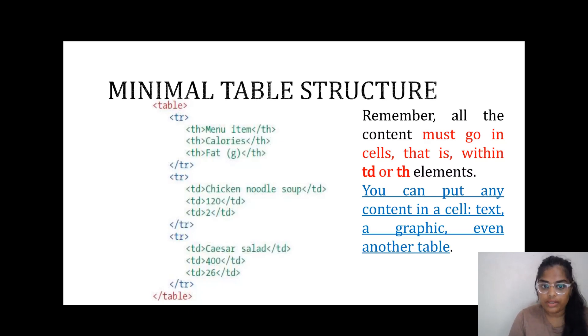Next is the example, a basic HTML table which we will see in more detail later. This is table TR, menu item, calories, fat, and they are closed with their closing tags. The next row is given, and another row is given here.